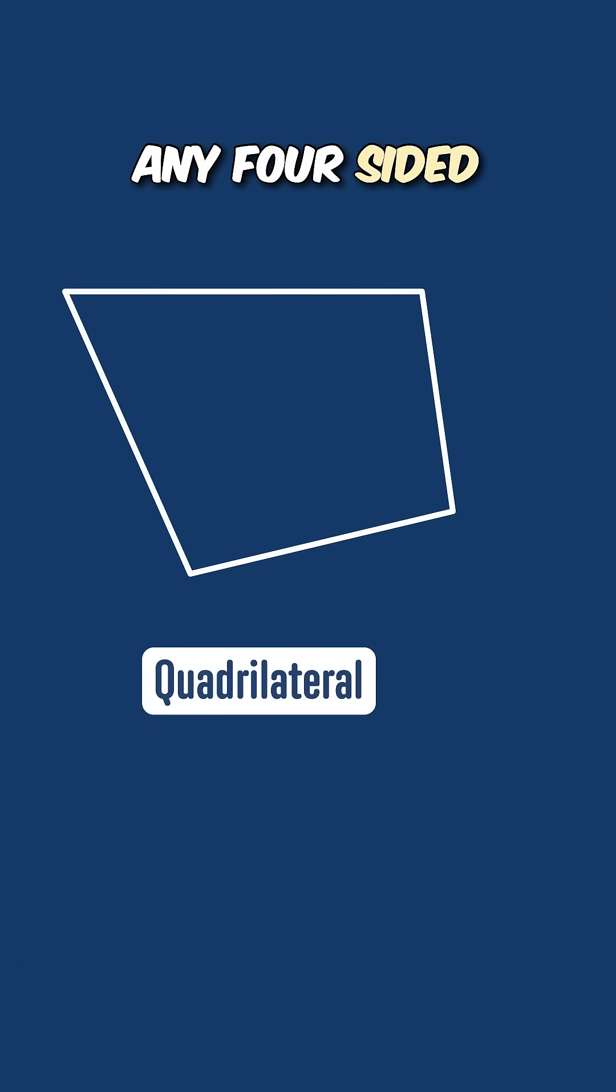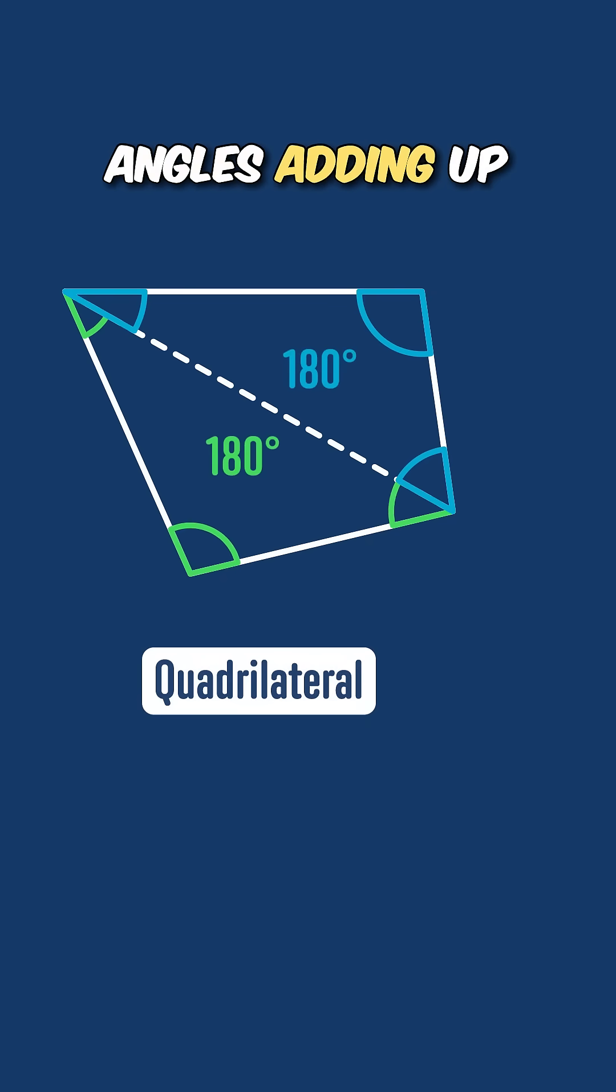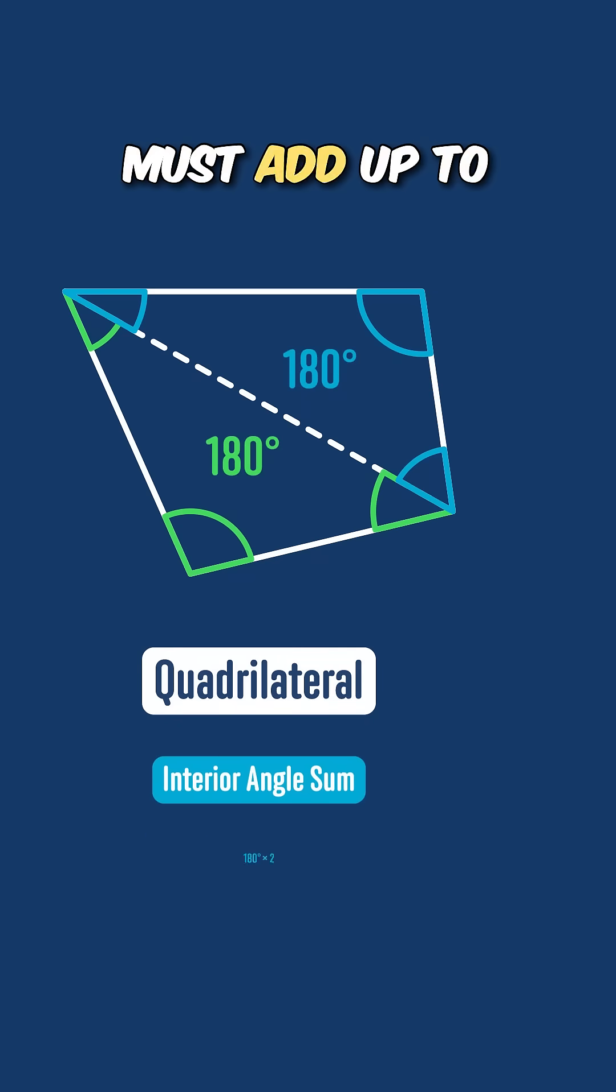We can split any four-sided shape into two triangles by drawing a line from one vertex to the opposite vertex like this. Since each triangle has angles adding up to 180 degrees, the quadrilateral's interior angles must add up to 180 times 2 or 360 degrees.